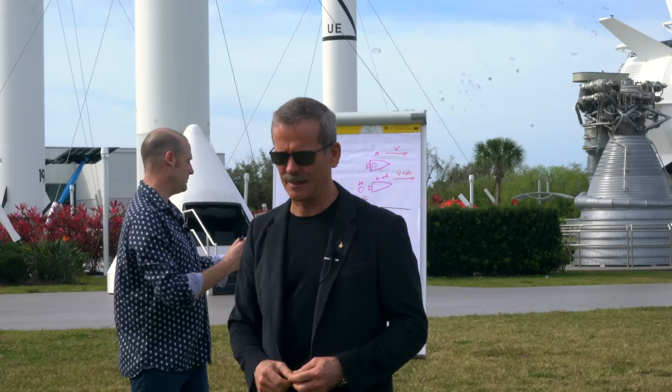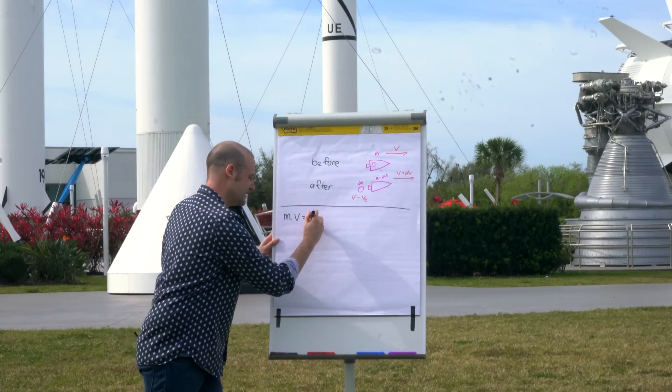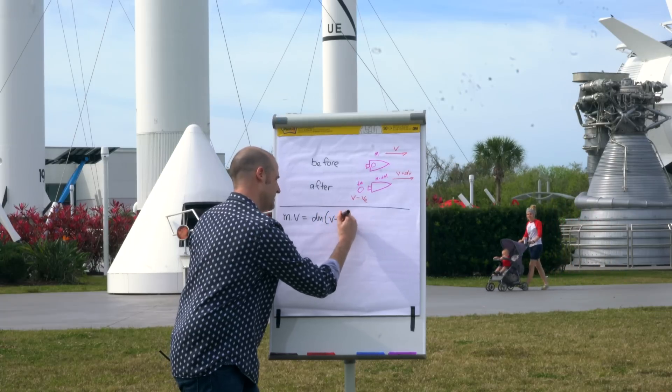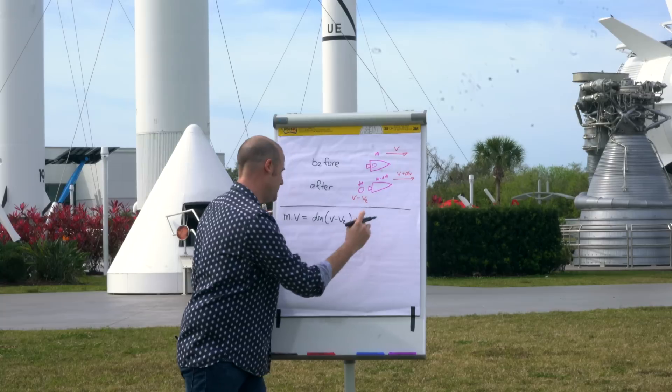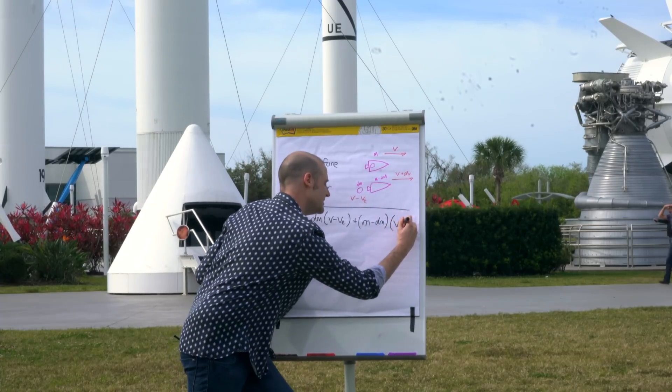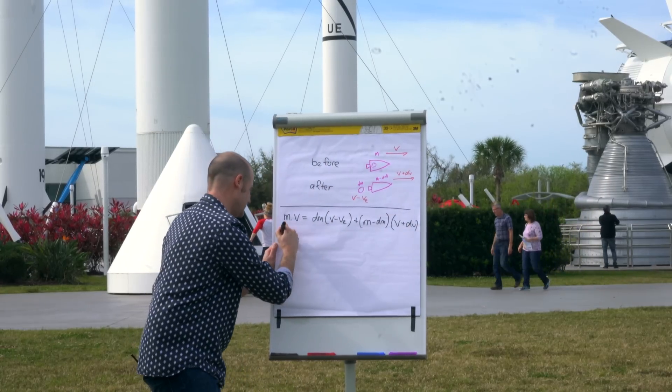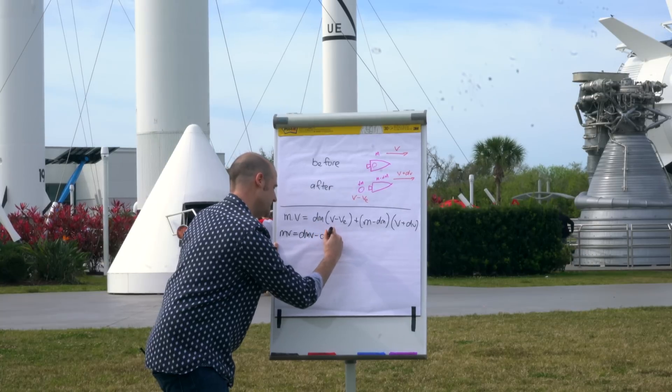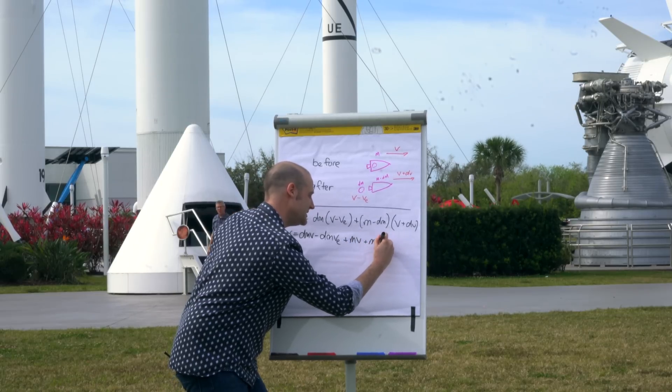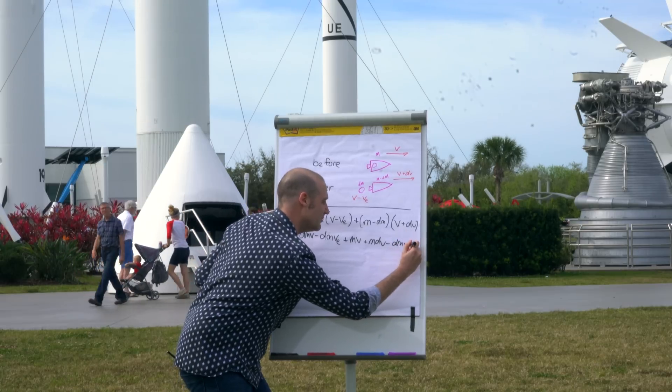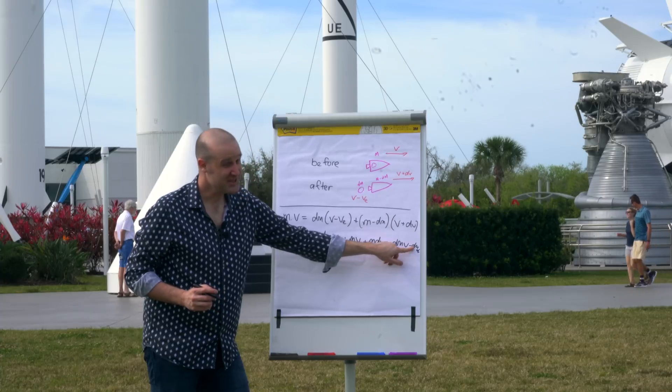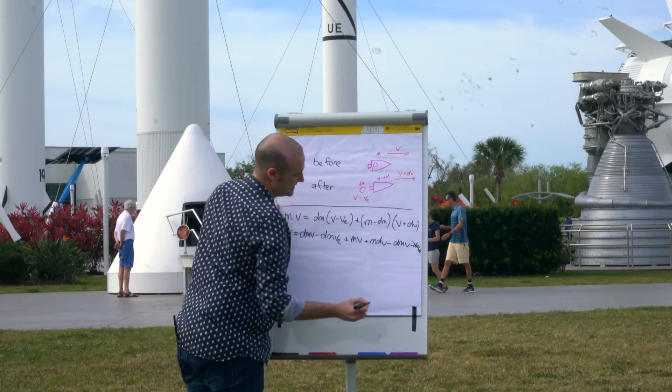The momentum before was m times v. That's the definition of momentum. And over here afterwards, I've got the momentum of this bit, which is dm times v minus the velocity of the exhaust, plus the momentum of this bit, which is m now missing dm times v plus dv. We're going to have to expand out all these brackets, so that's still mv on that side, dmv minus dmve plus mv plus mdv minus dm. I can barely get the final minus dm dv in, but to be honest, that's a tiny change times a tiny change. And we don't need that at all, so I'm going to cross that out completely.